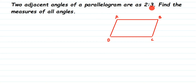They have not given one angle, they have just given the ratio 2 is to 3. Now, what are adjacent angles? Adjacent angles are which are present side by side. Like D and A are adjacent angles, D and C are adjacent angles, C and B are adjacent angles. D and B are opposite angles.